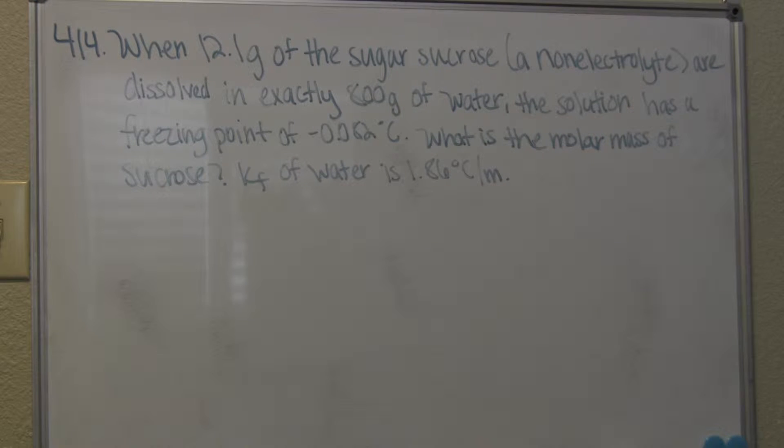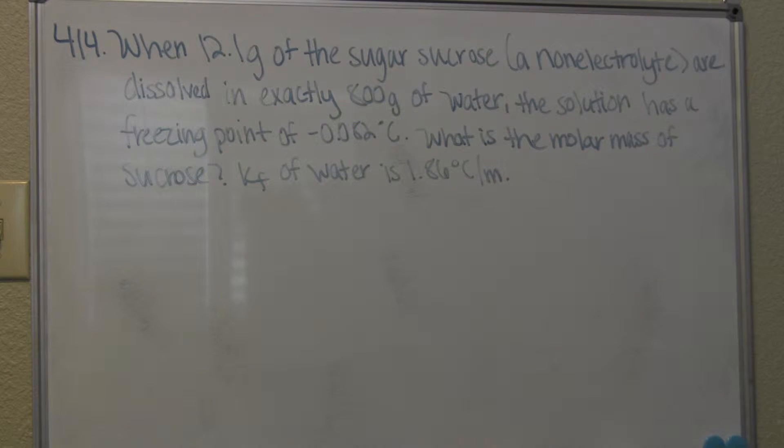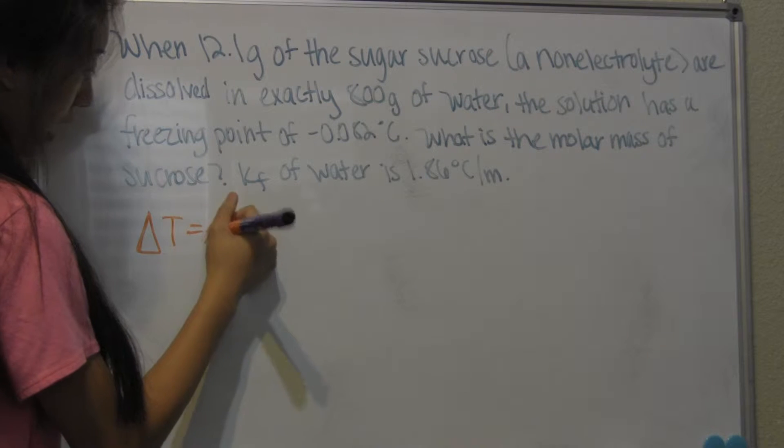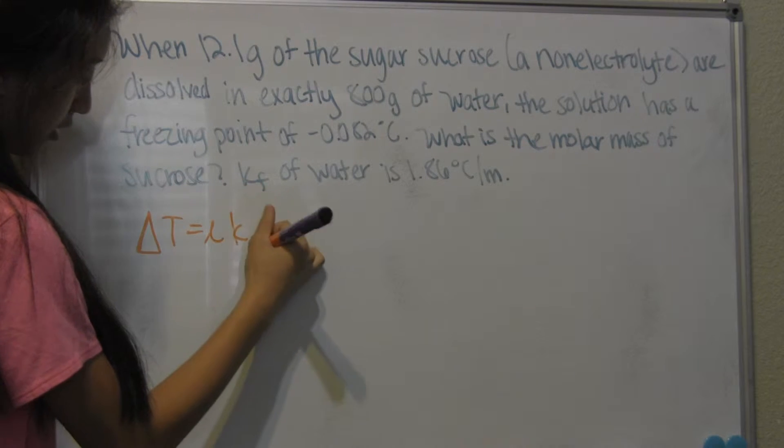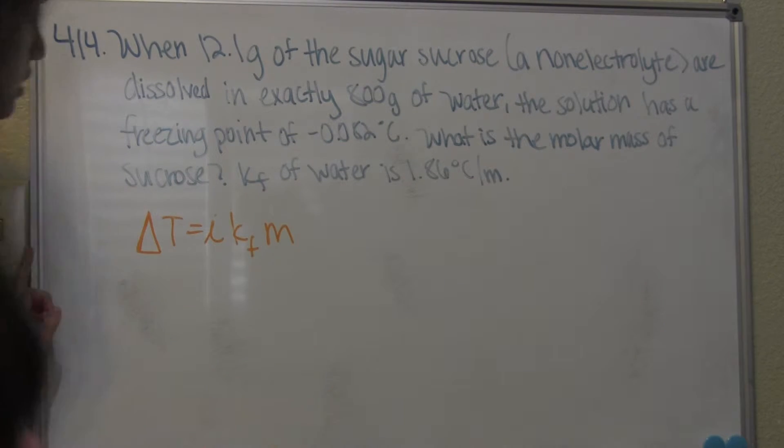So first things first, we have to find the molality in order to find everything else. The first thing that we're going to do, since we have the KF and we have the temperature, we're going to use those to find molality. We're going to use the equation delta T is equal to I times KF times molality.